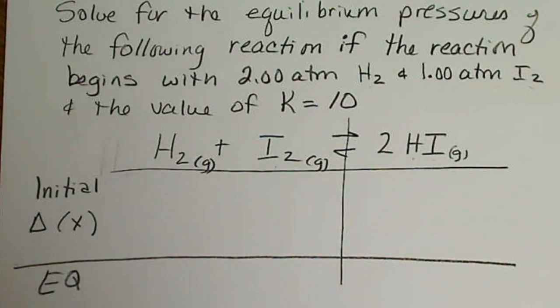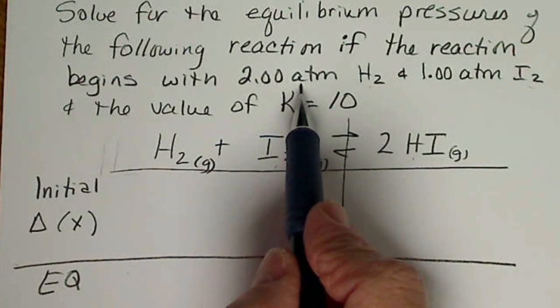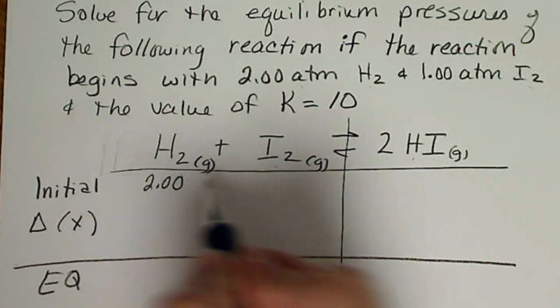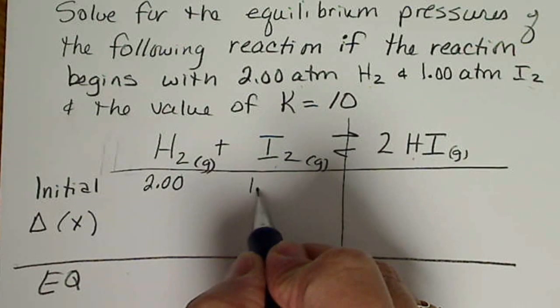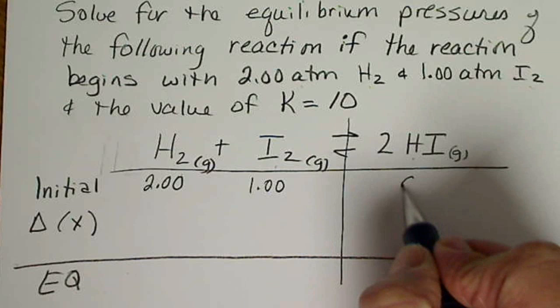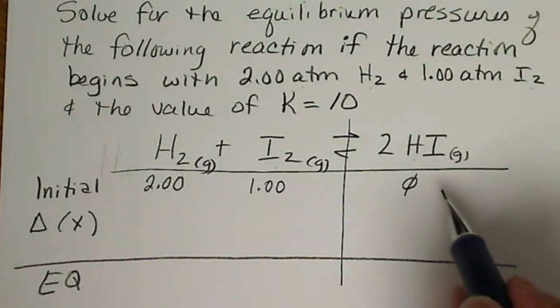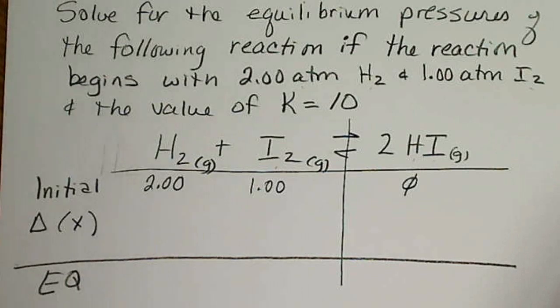Those are the values that we'll plug into the equilibrium expression. So if I start out with 2 atmospheres of hydrogen in my initial condition, I put 2 here, and then 1 atmosphere of iodine. It didn't say anything about the products, but we're assuming there are no products that we're starting with.